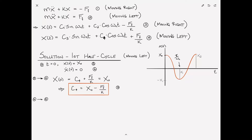Substituting the velocity initial condition — equation six — into equation four, differentiating gives omega_n C3 at time zero. The sine terms vanish, cosines become one, leaving omega_n C3 equals zero, which implies C3 equals zero — equation eight.